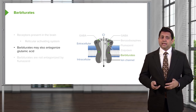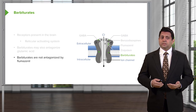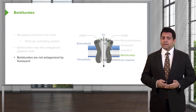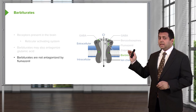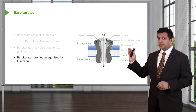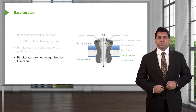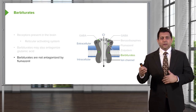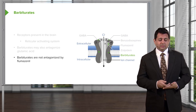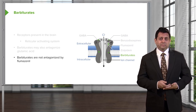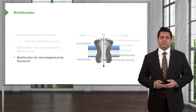Barbiturates may also antagonize glutamic acid. Barbiturates are not antagonized by flumazenil. Look where flumazenil is and where it binds to the gamma subunit, and then take a look at where the receptor binding site is for barbiturates — they're quite far apart. Flumazenil is an antidote to benzodiazepine poisoning or overdose; it does not work against the barbiturates.